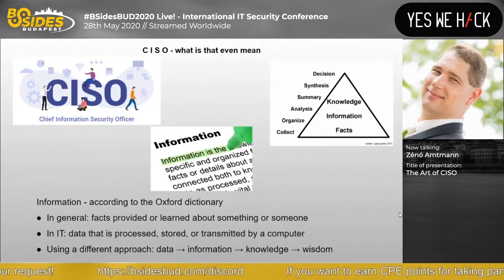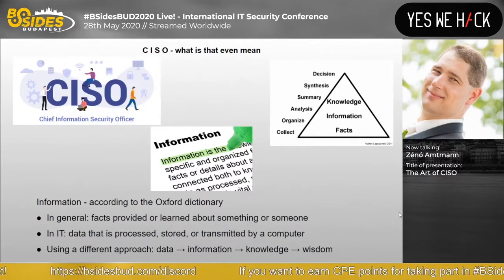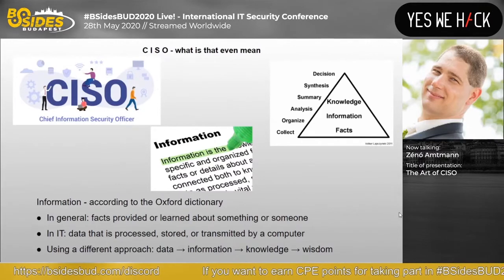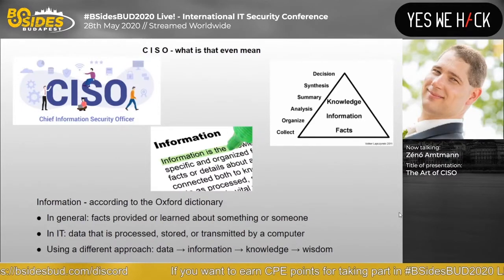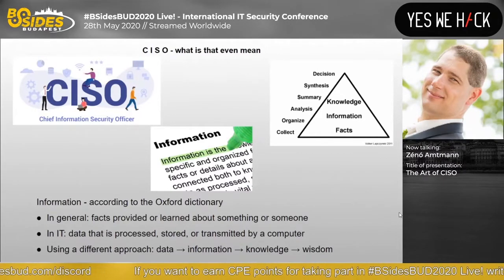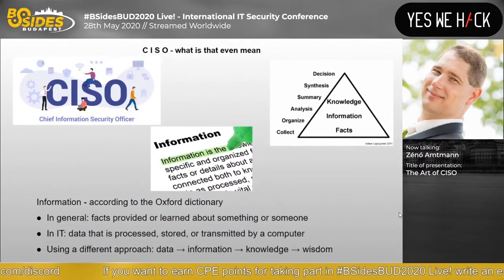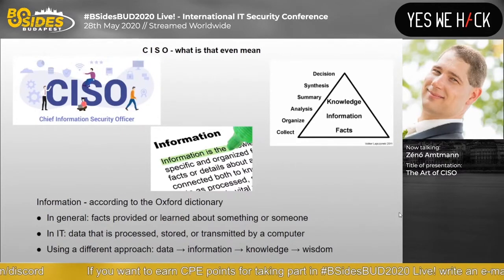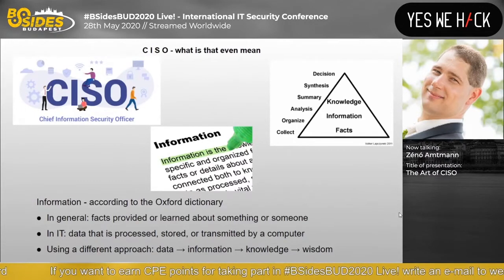Let's open up a little bit. Information — what is information? There are a number of different definitions. According to the Oxford Dictionary, in general it means facts provided or learned about something or someone. In computer terms, it defines this word as data that is processed, stored, or transmitted by a computer. However, we can use a different approach — knowledge, like building blocks, if you like: data, information, knowledge, wisdom.